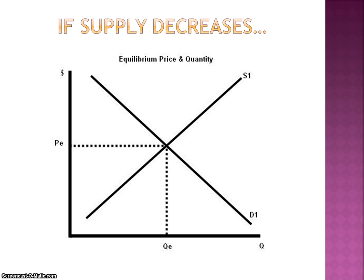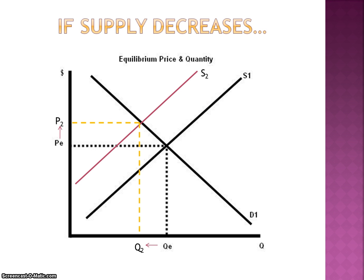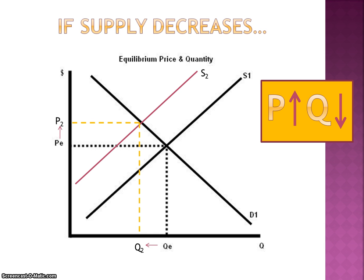If supply decreases — let's say the input costs rise for a producer — it makes sense that price will rise and the equilibrium quantity in the market will decrease. A producer's cost increases, they're not going to be able to sell as much because they're going to have to charge a higher price for the item. That's always going to be true: price up, quantity down whenever supply decreases.